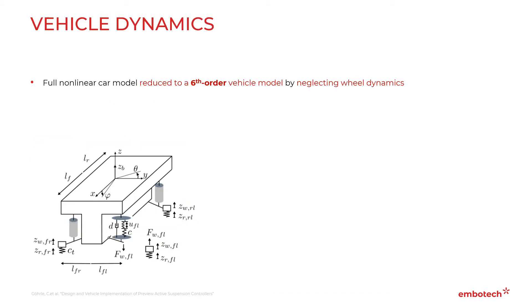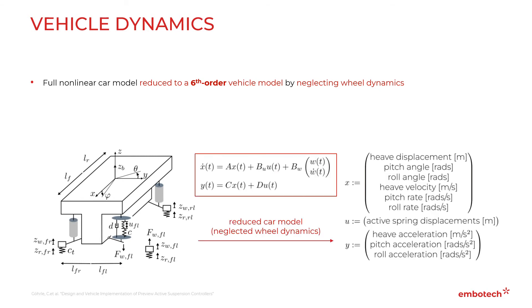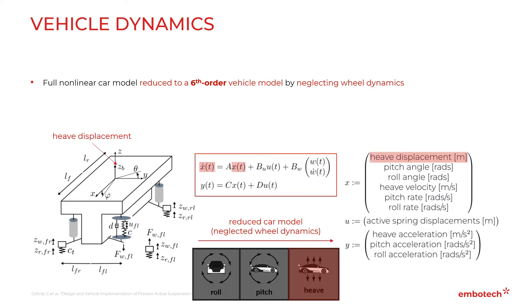In terms of vehicle dynamics, we will use a full car model reduced to a sixth-order vehicle model by neglecting wheel dynamics. This will result in the following linear state space with six state variables, four control inputs, and three plant outputs.